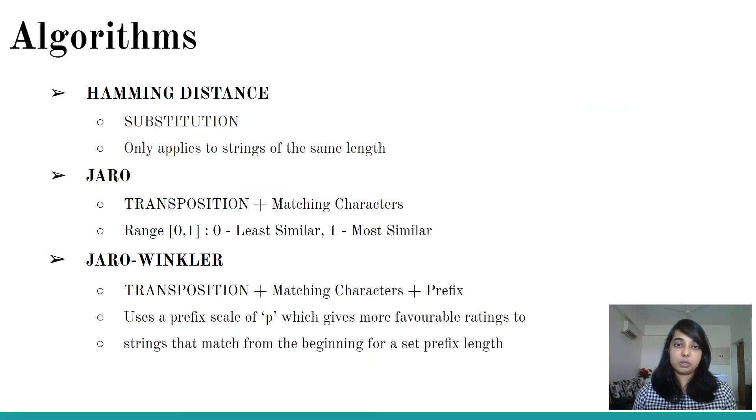Another few algorithms you need to take into account is hamming distance, Jaro and Jaro-Winkler. Hamming distance only focuses on substitution. If you have a use case where both strings are the same length and you want to see how dissimilar they are, you can definitely use hamming distance.